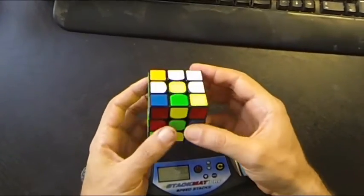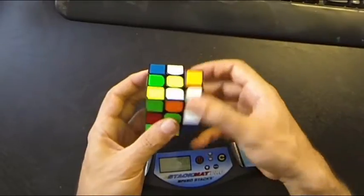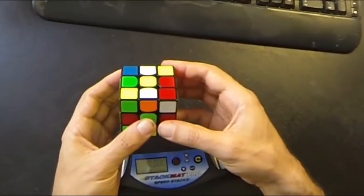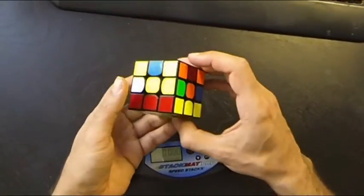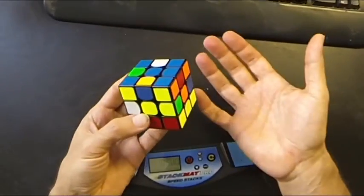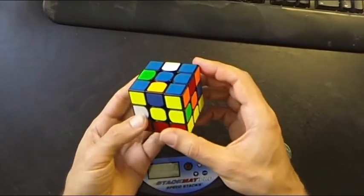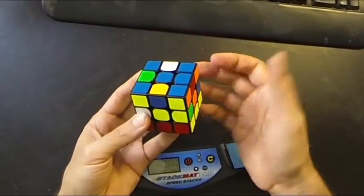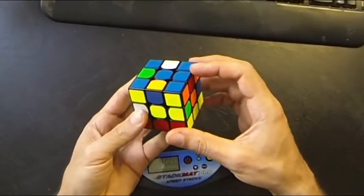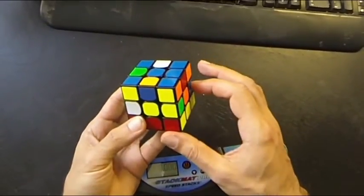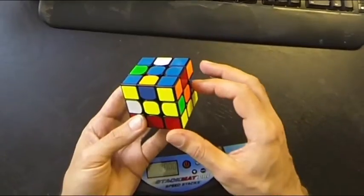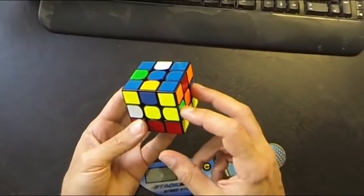I basically did a U R2 and then I got a CL skip. The first thing I saw, as I always do in this method, is I look for oriented edge pieces on the top and I also look at the E slice for possible edges for my first E2L pair.